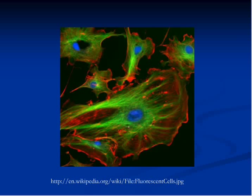Cytoskeleton is also vital for cell movement. Cells like neutrophils and macrophages, which are white blood cells, would not be able to move from one place to another without cytoskeleton. Without cytoskeleton, cells of muscles would not be able to shrink or stretch. Cytoskeleton also plays an important role during mitosis, which is a process of cell division.